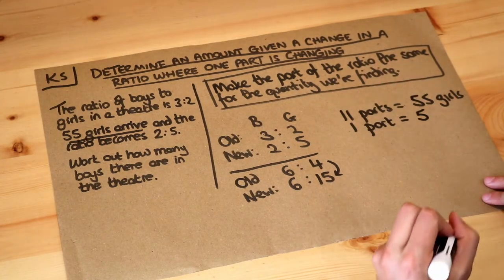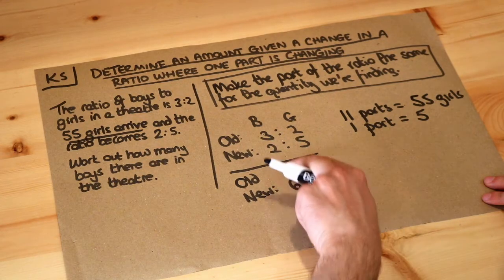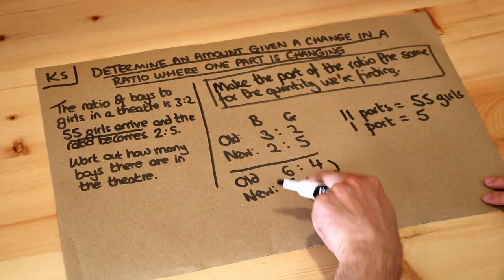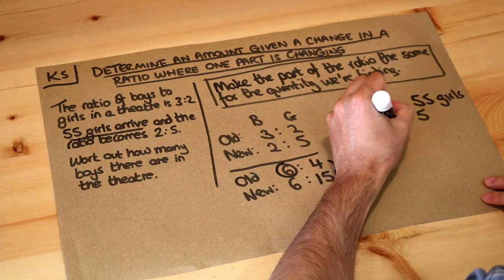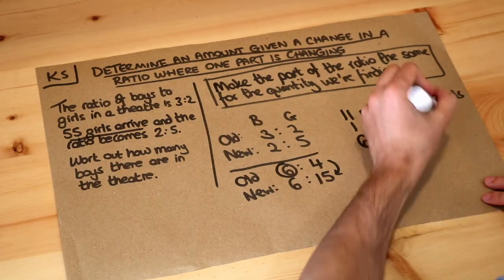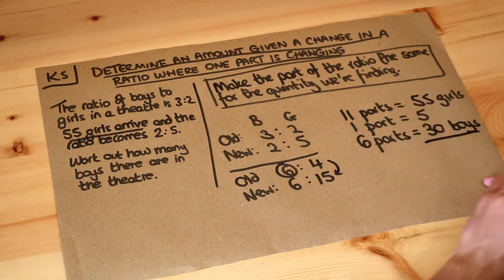And then we want to work out how many boys there are in the theatre. When the ratio was written this way with the boys the same, we had 6 parts boys, so 6 parts would be 6 times 5 which is 30. So that means the answer is 30 boys.